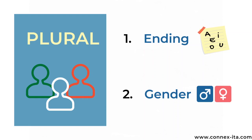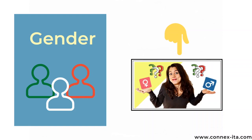In today's lesson, I'll give you some simple guidelines to change words to plural in Italian. These are only general rules, and you'll find some exceptions, but it's a good starting point. Basically, to get the plural of a noun, we'll look at two things: the way the word ends — so its last letter — and its gender, that can be masculine or feminine. Note that to fully understand today's topic, you need to know what word gender is in Italian, so check out that lesson before you move on.